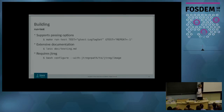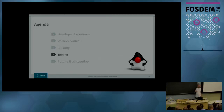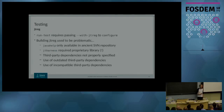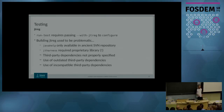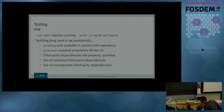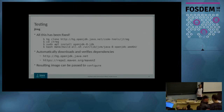This leads us into the next section about testing, because getting a hold of a proper JVM image hasn't always been the easiest. If you want to use the run-test feature, you need to pass the proper JVM image via --with-jtreg to configure. Building JTReg used to be problematic: JavaHelp, a dependency of JTReg, was only available in an ancient Subversion repository; JTReg harness required a proprietary library; dependencies were not properly specified; and when you did find versions, they were outdated and incompatible with each other.